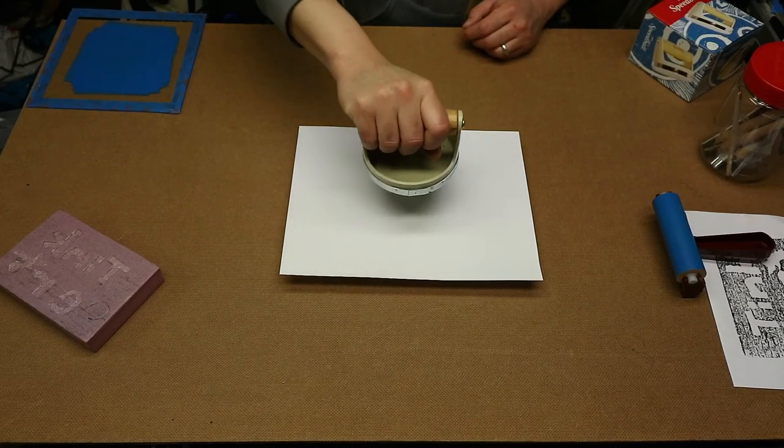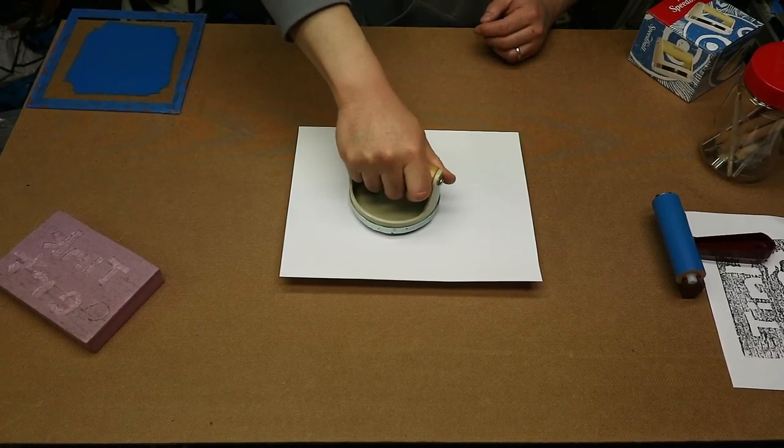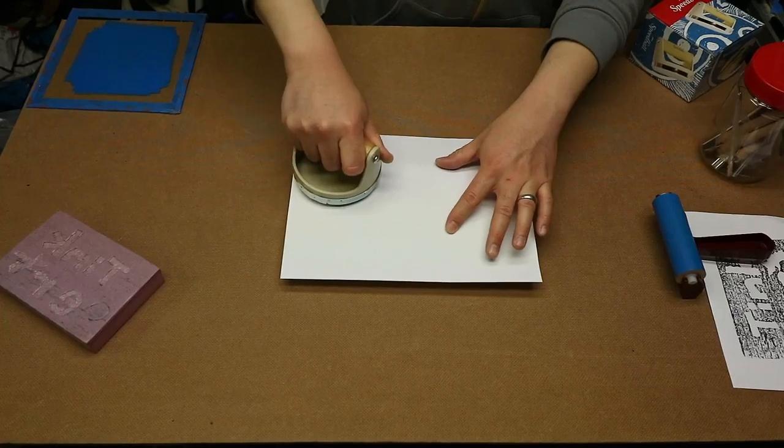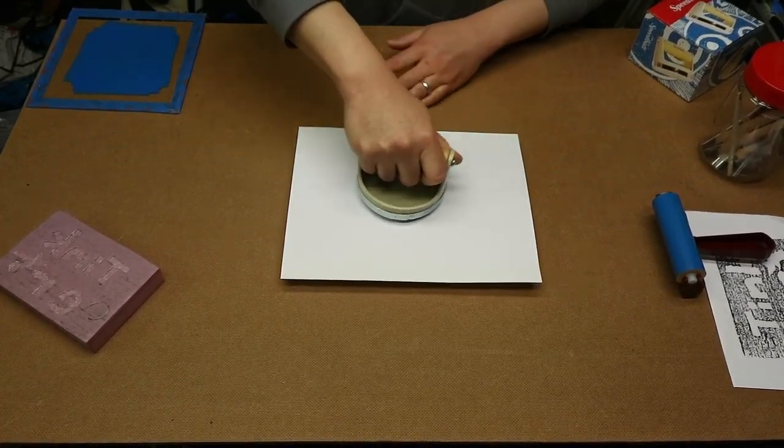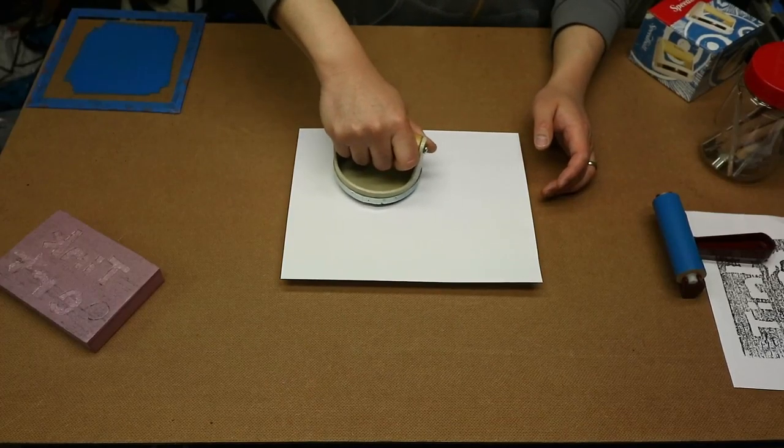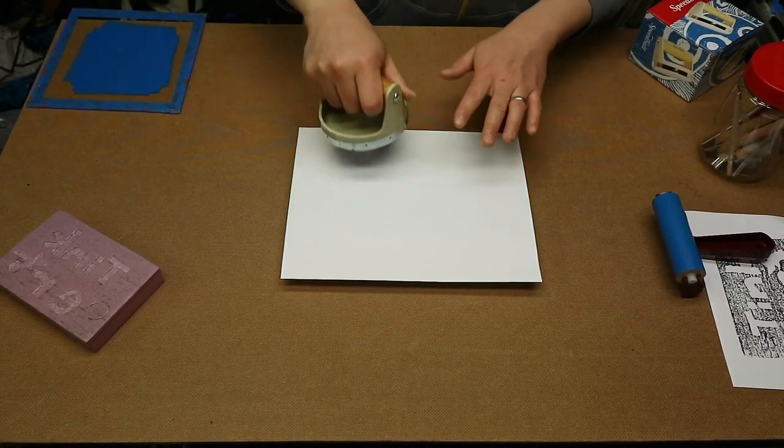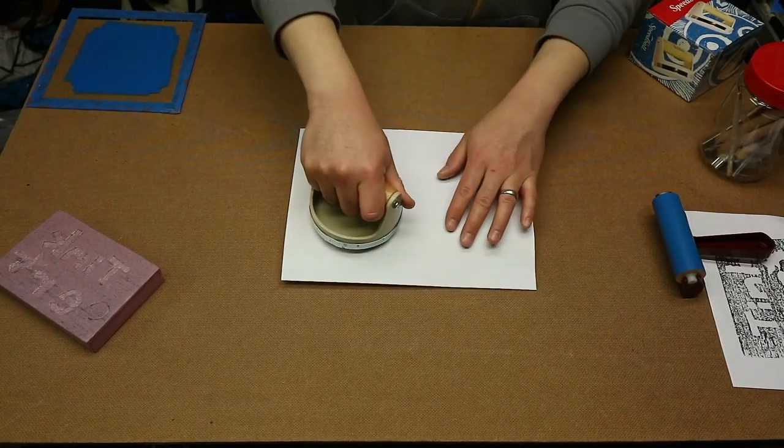Use our barren. Just straight down. Wiggle. Straight down. Wiggle. And just get good coverage of the paper to the block. And just trying to be mindful to not move or shift the paper as we apply pressure.